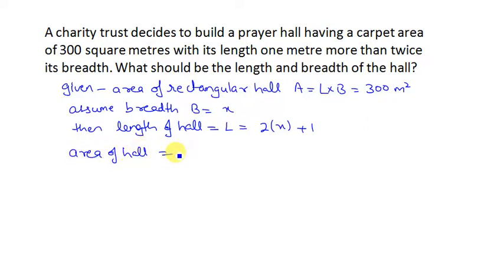Area of the hall is equal to length into breadth. The length is 2x plus 1, breadth is x, and this is 300. So 2x squared plus x is equal to 300.